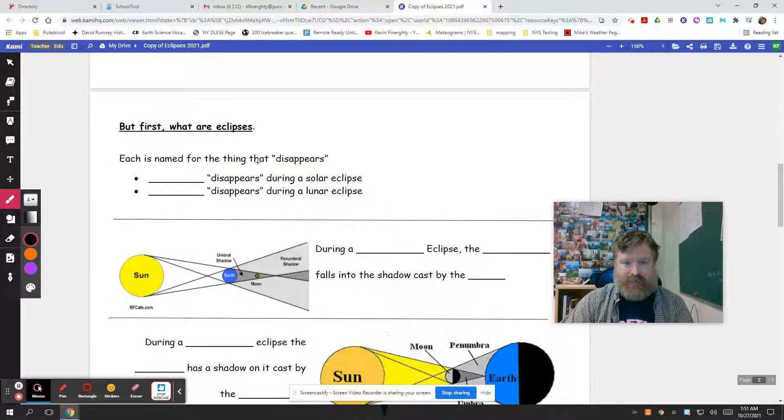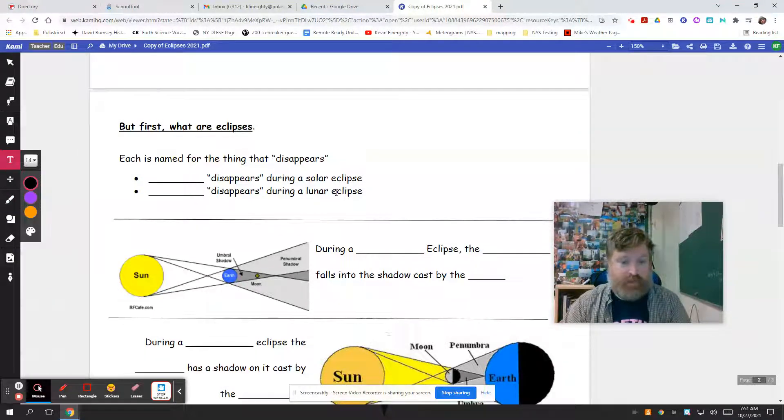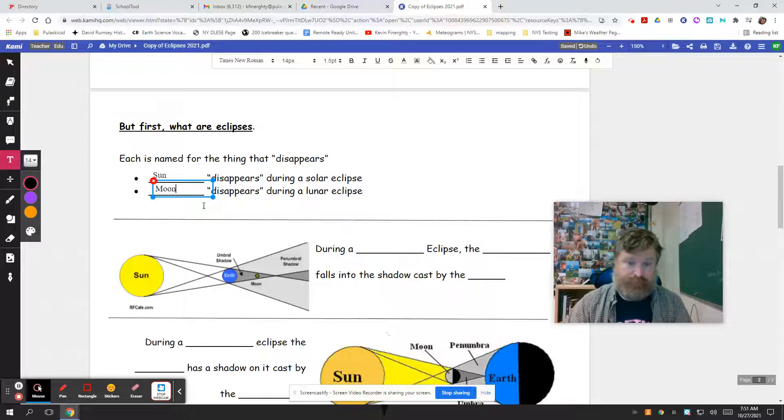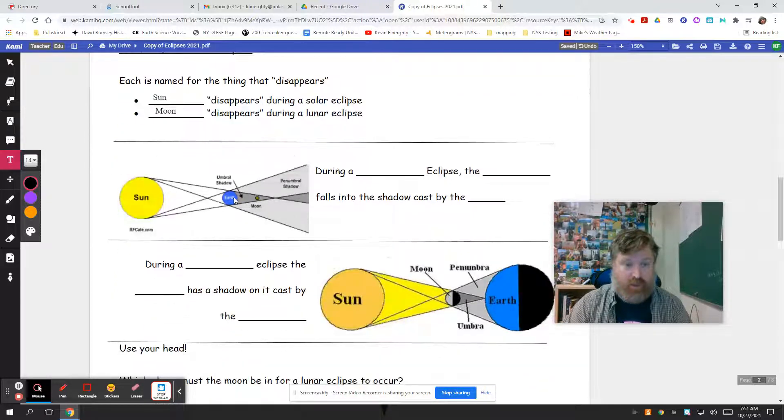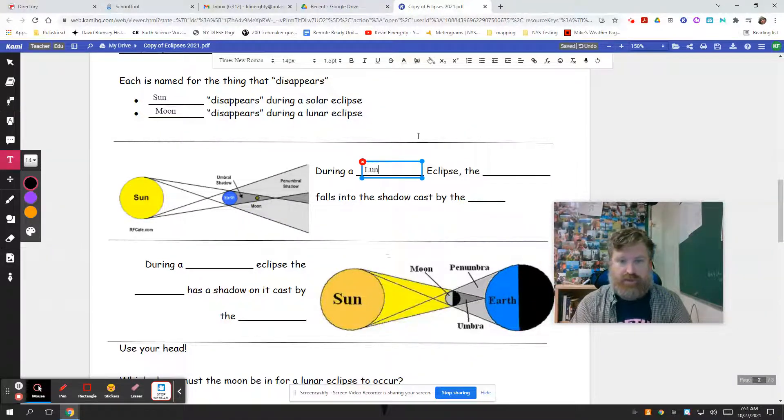So what are they? Each eclipse is named for the thing that, quote-unquote, disappears, the thing that if you're standing there watching, you suddenly won't be able to see for a little bit until it's over. So the blank disappears during a solar eclipse - sun, and the blank disappears during a lunar eclipse - that's the moon.